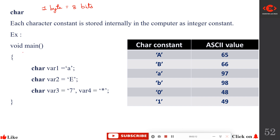Here we have a simple example for char. Char is a keyword as well as a data type. We have declared variables var1, var2, and var3. For each character constant assigned to a variable, it is stored as an integer constant in computer memory. For capital letter A, the stored integer value is 65.